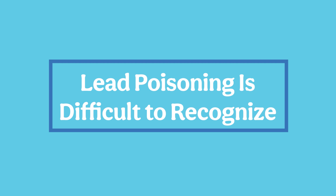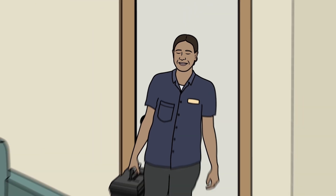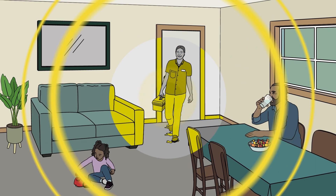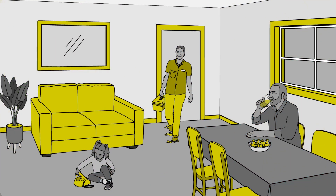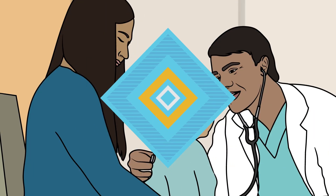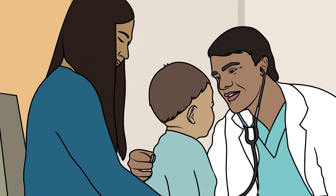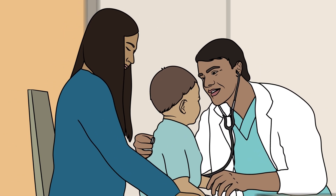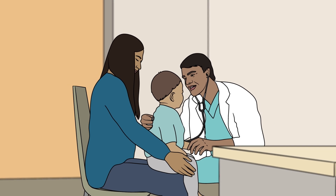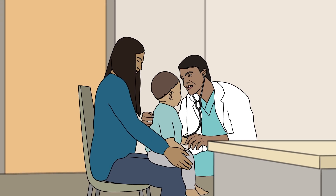Lead poisoning is difficult to recognize. You cannot taste or smell lead, and it is hard to see when mixed with other things. However, sources of lead can be identified and reduced. A health provider can test blood for lead if a person has been exposed. While the effects of lead exposure cannot be reversed, they can be managed. Contact your health care provider if you think you were exposed to lead.